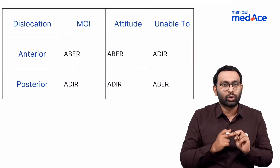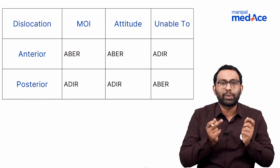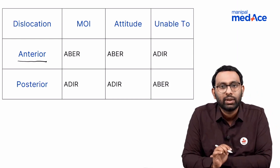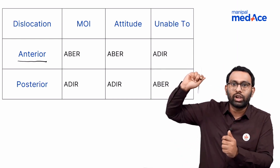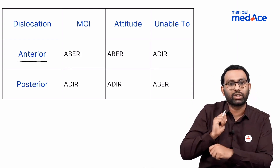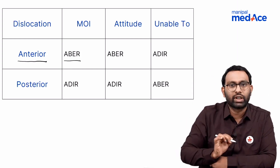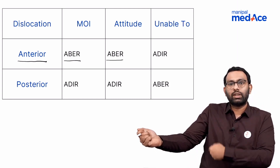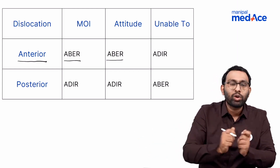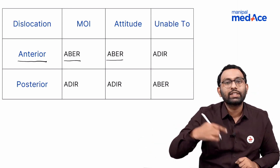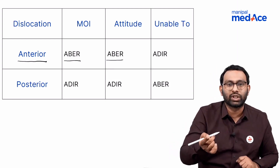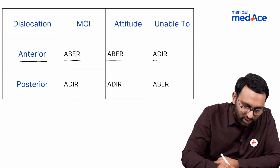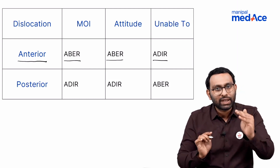Applying the rules to anterior dislocation: the mechanism of injury is abduction and external rotation — like throwing a ball. So the attitude will also be abduction and external rotation. The patient will come to you with the limb in abduction and external rotation. The movements that are not possible are the opposite of the attitude, which is adduction and internal rotation.